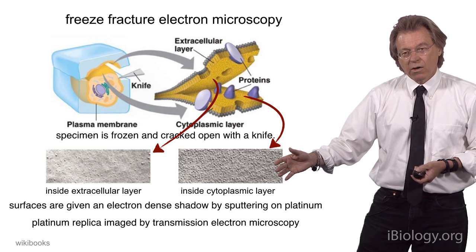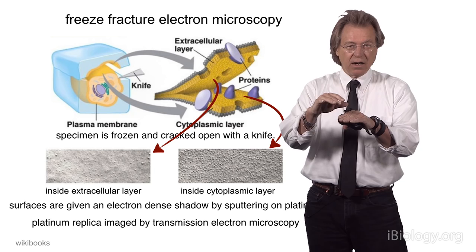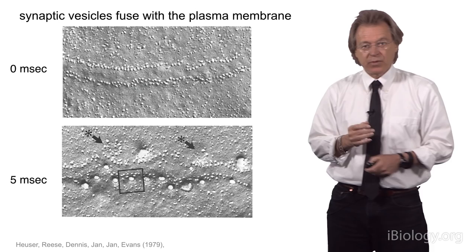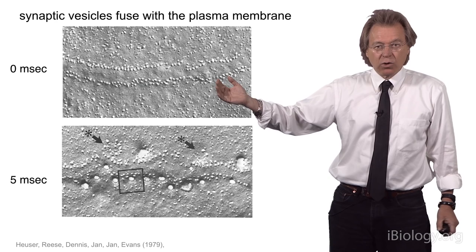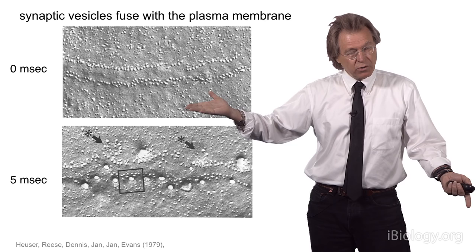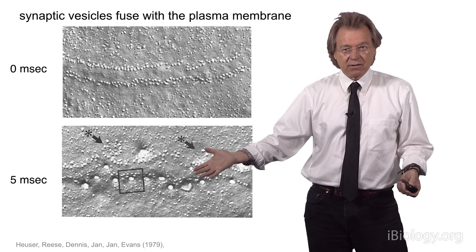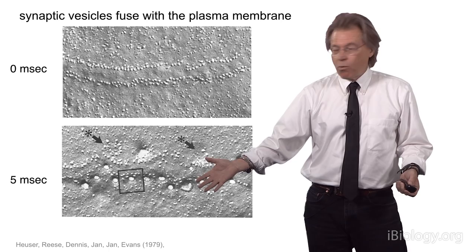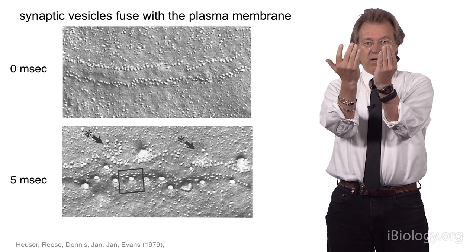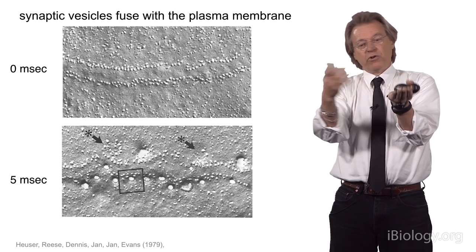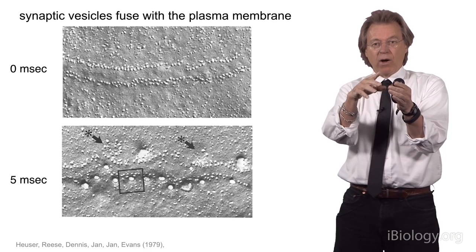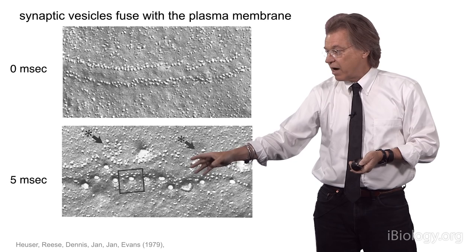They applied this technique to stimulated synapses to see what these events look like in the plasma membrane. At zero milliseconds in an unstimulated synapse, you see little bumps, likely calcium channels. Five milliseconds after stimulation, there are invaginations — a synaptic vesicle has fused with the membrane and created a neck. When you split the ice, it breaks across the thin part of the neck, producing little disks of ice at that neck. Once again, they demonstrated that synaptic vesicles fuse with the plasma membrane.